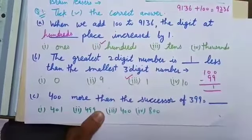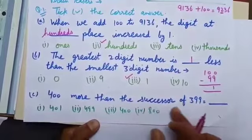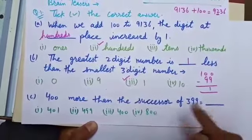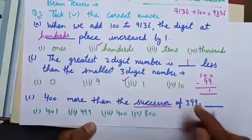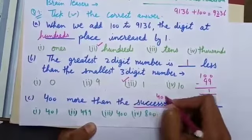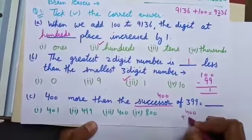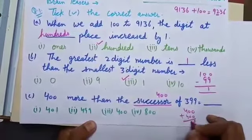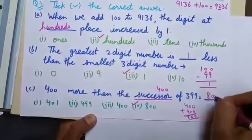Tick the correct answer. Now come to part C. 400 more than the successor of 399. Successor means 1 more. Successor of 399 is 400. Now 400 more than 400. 400 plus 400. Answer is 800. Now tick the correct answer, 800.